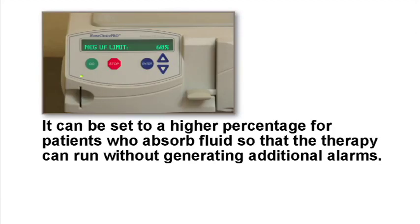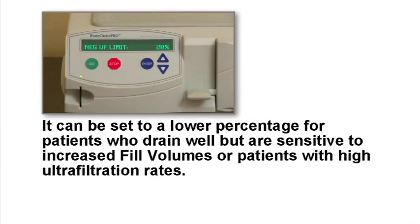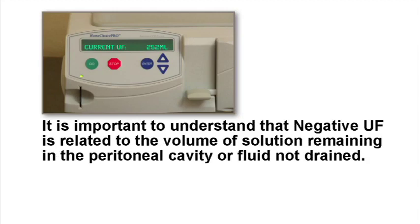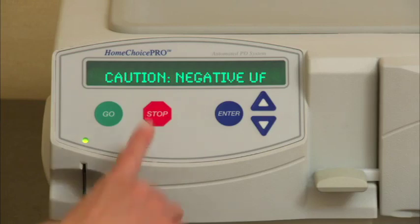It can be set to a higher percentage for patients who absorb fluid so that the therapy can run without generating additional alarms. It can be set to a lower percentage for patients who drain well but are sensitive to increased fill volumes or patients with high ultrafiltration rates. Negative UF is related to the volume of solution remaining in the peritoneal cavity, or fluid not drained from the fill volume. This is a manual restart alarm, which means you must manually stop the alarm and correct the situation.